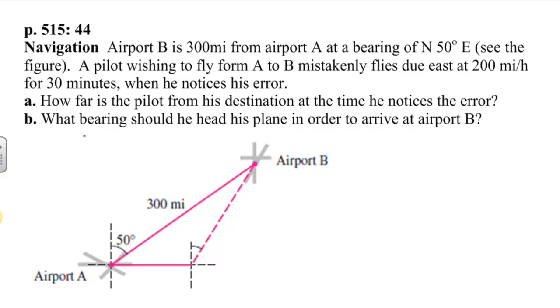The question is, how far is the pilot from the destination at the time he notices the error, and what bearing should he head his plane in order to arrive at airport B? So this takes into account some information about navigational systems and going in the wrong direction, I guess, but as we go through this, we have a triangle and we can fill in some information that we know.